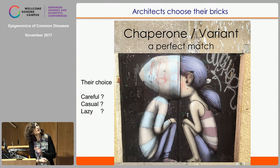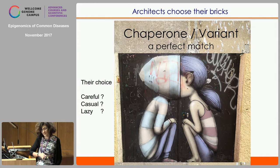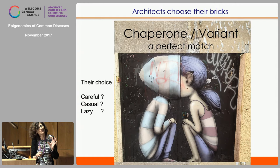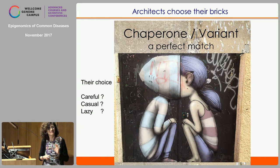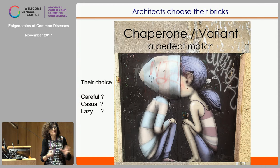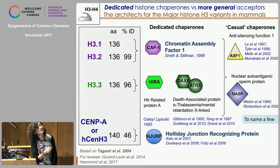How do the architects choose their bricks? I quite like this drawing on a wall close to the Curie Institute, which reminds me of the possibility of a perfect match between the chaperone and the variant. The world is never perfect, so things are not exactly like that, but there are certainly cases where you have a careful match, in other cases it's more casual, and in some cases it's just a matter of taking what comes by.